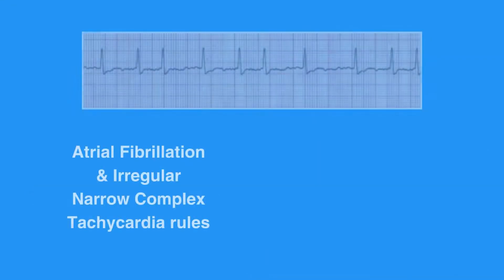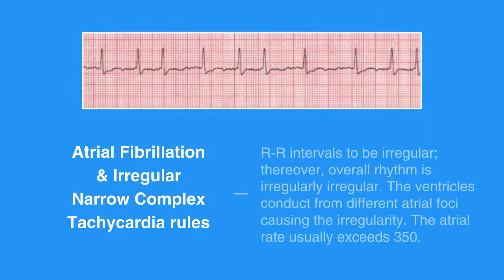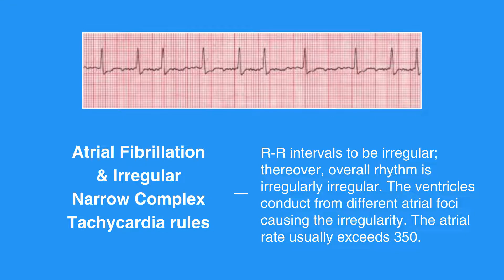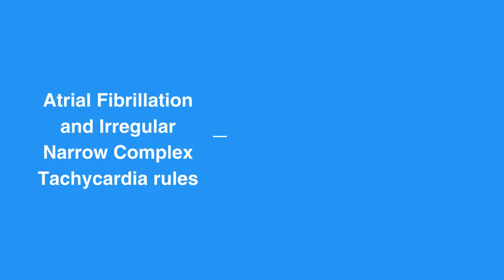The atrial fibrillation and irregular narrow complex tachycardia, or AFib, rules include R intervals to be irregular; the overall rhythm is irregularly irregular. The ventricles conduct from different atrial foci causing the irregularity. The atrial rate usually exceeds 350. If the ventricular rate is between 60 and 100 beats per minute, this is known as controlled AFib.